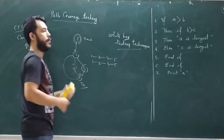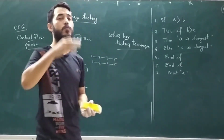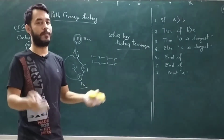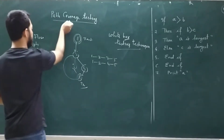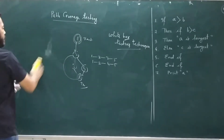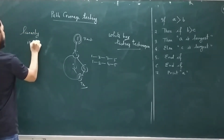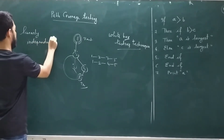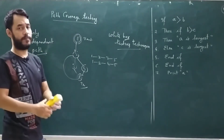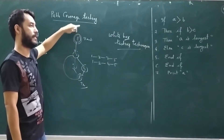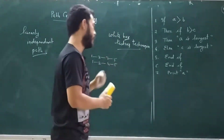It is not possible to design test cases to cover all paths because you may not know how many times nodes will be executed, and even if you do, it's not feasible for large programs. So there is a concept called linearly independent path. In path coverage testing, you have to cover each and every linearly independent path at least once.